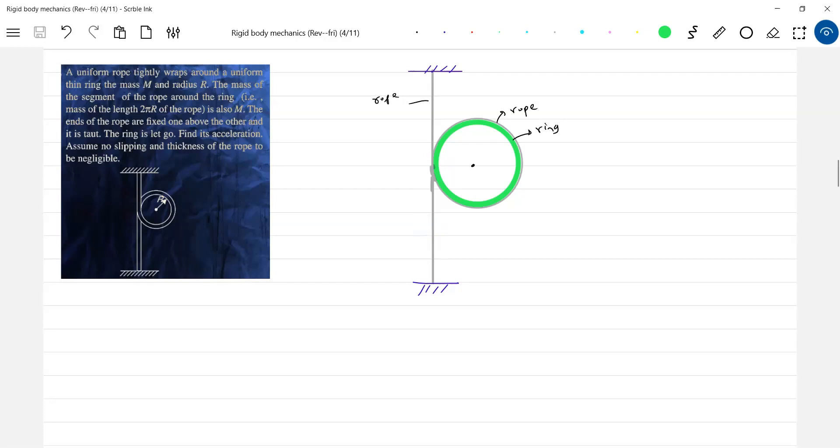Will also be taut because the rope is in the thin ring and the mass of the segment of the rope around the ring is also M. The rope in fact is having a mass. Let's note this one. The mass of the rope that is wound on the ring will be M all the time.